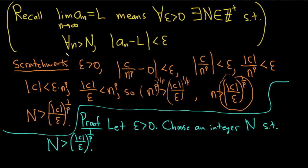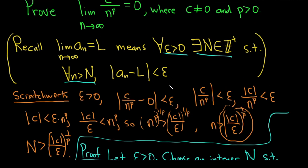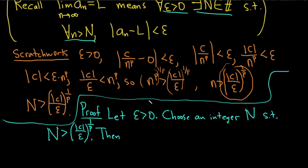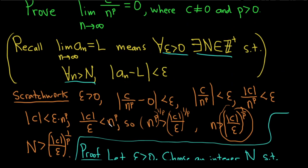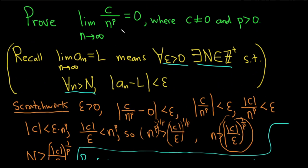Then for all n bigger than N, all of this makes sense. p is positive, so we can divide by p. For all little n bigger than capital N, we have to look at a sub n minus l. So we have the absolute value of c over n to the p minus 0.